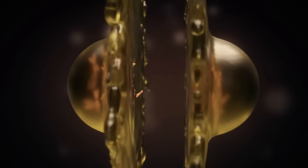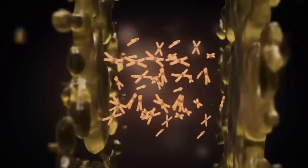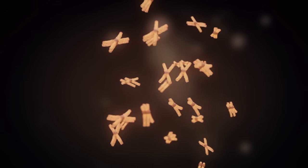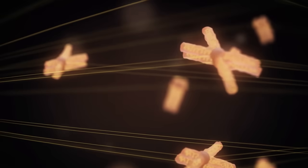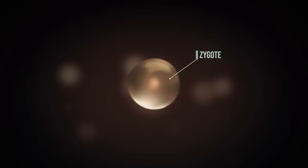Syngamy occurs, in which the pronuclei dissolve and the chromosomes of male and female are properly aligned in the spindle apparatus. Now, the cell is called a zygote, which is the very first cell of the new human being.